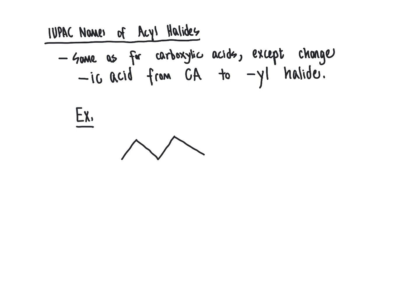I'm going to draw out an acyl halide molecule. As our starting point, we find the longest carbon chain, keeping in mind that the longest carbon chain has to contain the acyl halide because it is the highest priority group. The acyl halide is more important in determining the longest carbon chain than an ether group or any other group in the molecule. So the longest carbon chain has to start at the acyl halide carbonyl carbon, highlighted in green.